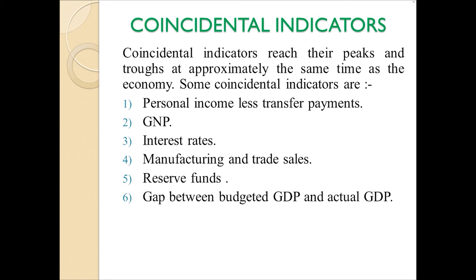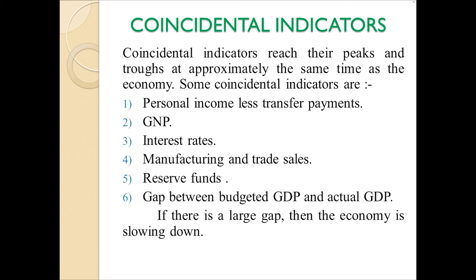A GDP will be budgeted and there will be an actual GDP. If the budgeted GDP is equal to the actual GDP, then the country is in a better performance state. But if there is a large gap between the budgeted and the actual GDP, it means that the economy is slowing down. Presently, India has a very large gap between the budgeted GDP and the actual GDP, and as a result our economy is noticeably slowing down.